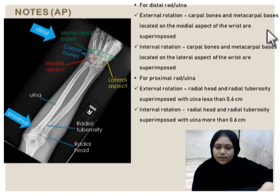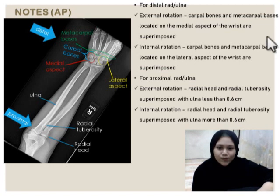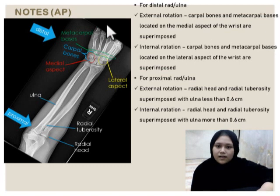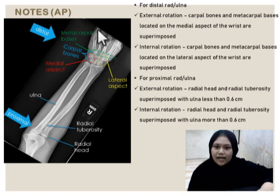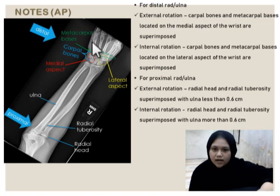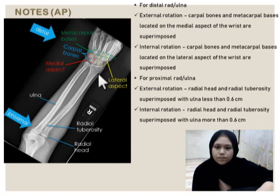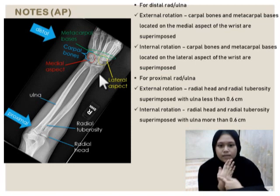How do we know if there is any rotation? For external rotation distally, carpal bones and metacarpal basis located on the medial aspect of the wrist are superimposed. If it has external rotation, carpal bones and metacarpal basis are superimposed at the medial aspect. This one is medial aspect, this one is lateral aspect. Lateral aspect is the thumb side.